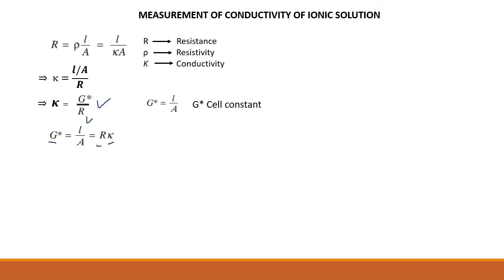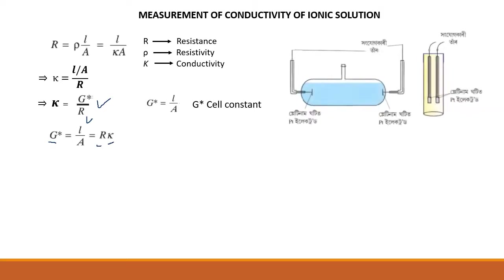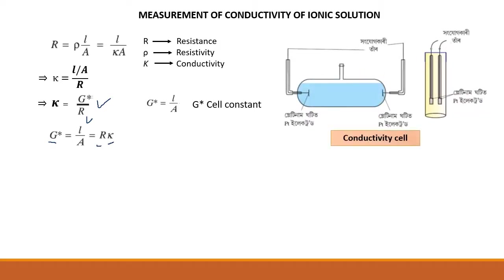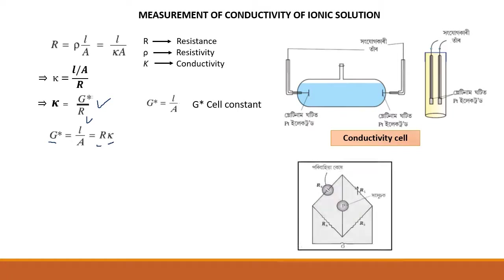We know simply voltage divided by current — R equal to V by I, that is voltage divided by current. So extracting the resistance value that way is difficult. So we connect to a conductivity cell.